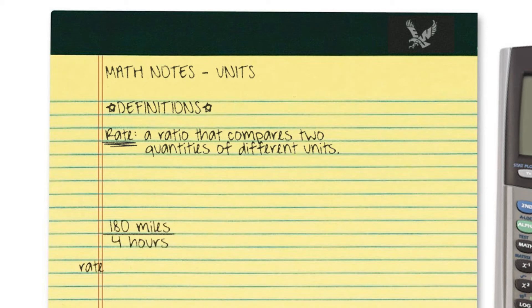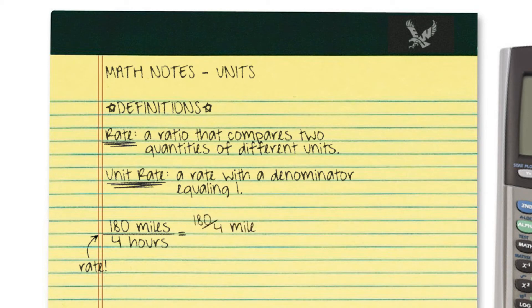If we rewrite the fraction in such a way so that the denominator is 1, then we call this a unit rate. This can easily be achieved by dividing the denominator into the numerator. So if the car is moving at a rate of 180 miles every 4 hours, then we can say the car moves at a rate of 45 miles per hour.